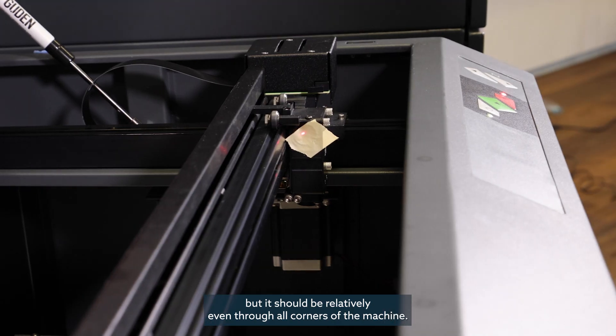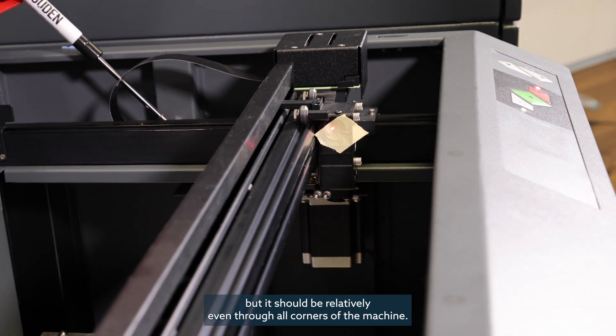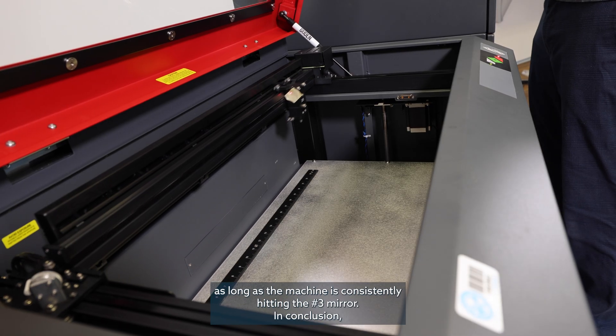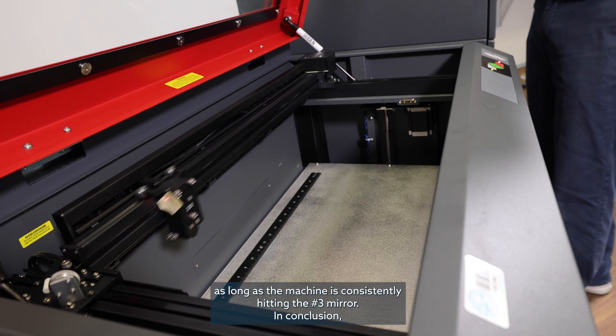It doesn't need to be perfect, but it should be relatively close to the corners of the machine. Repeat this process for all the other corners. A slight movement in the red dots position is okay, as long as the machine is consistently hitting the number three mirror.